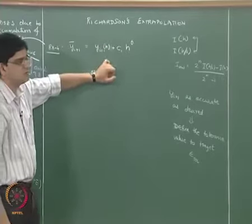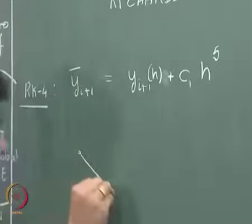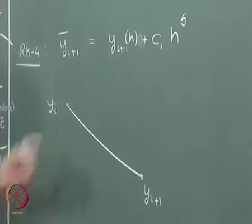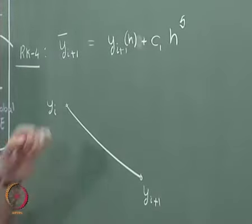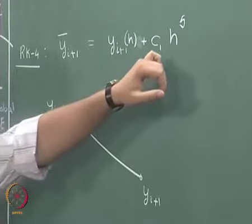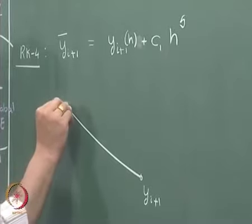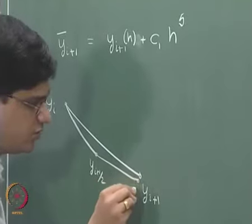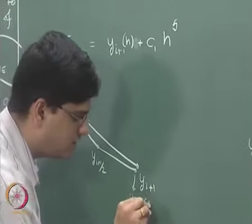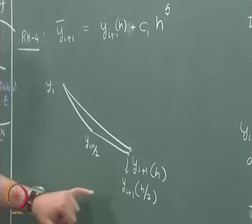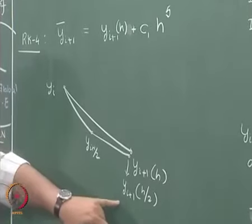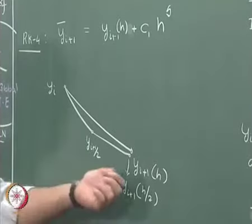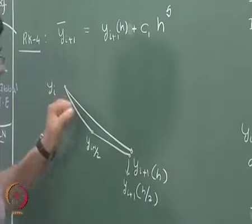Now let us redo this same thing going from y_i to y(i+1) in two steps; in this case the step size is going to be h/2. We will go from y_i to y(i+1/2), and from y(i+1/2) we will go to y(i+1), computed with a step size of h/2. This two-step method is going to be more accurate in giving us the value of y(i+1) compared to using one single step to go from y_i to y(i+1).